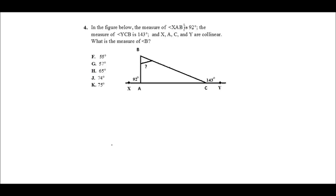In the figure below, the measure of angle XAB is 92. The measure of angle YCB is 143, so we've got 92 and 143. And X, A, C, and Y, those four points, are collinear. What is the measure of angle B?